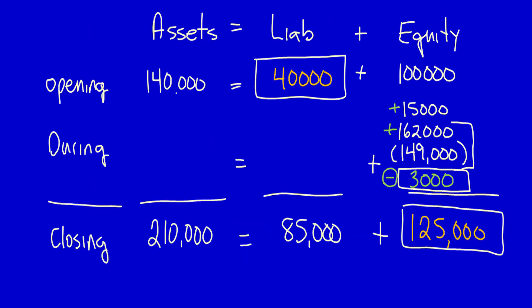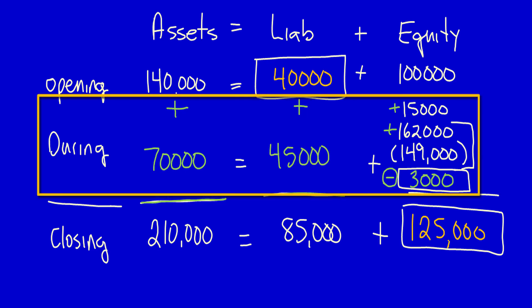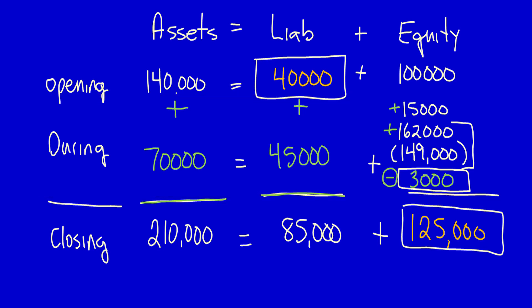Moving up to solve the remaining unknowns: the change in assets is $210,000 minus $140,000, which equals positive $70,000. The change in liabilities is $85,000 minus $40,000, which equals positive $45,000. Recalculating the row for the period, we can verify that $70,000 equals $45,000 plus the summation of the four equity items. I'll continue with this question in the next video — thank you for watching.